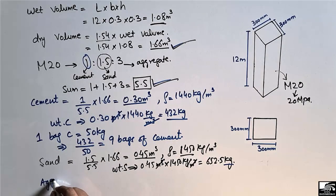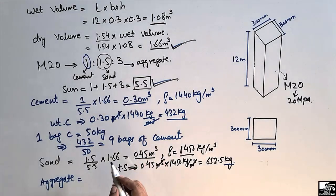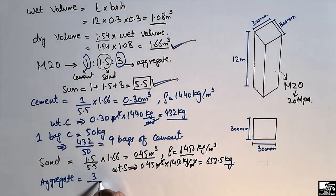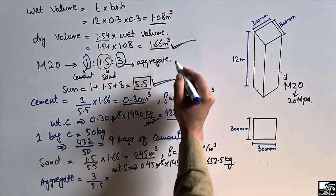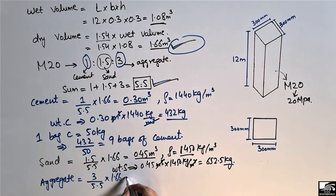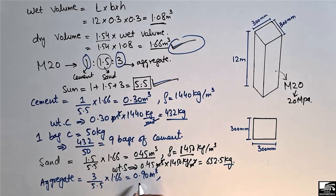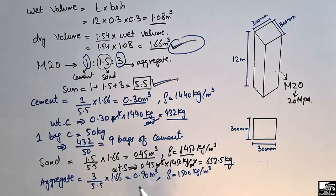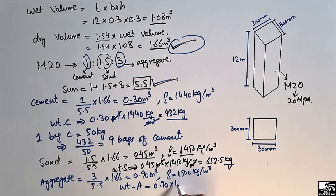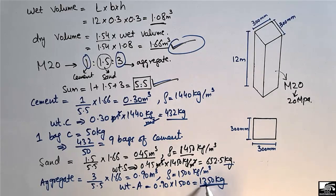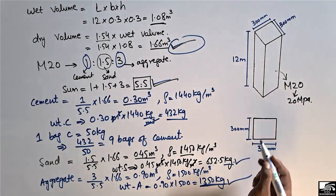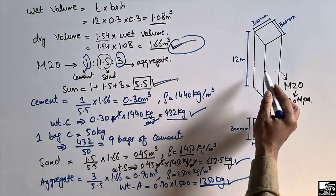For aggregate, we apply the same formula: (3 / 5.5) × 1.66, giving us 0.90 cubic meters. The density of aggregate is 1500 kg/m³, so multiplying 0.90 by 1500 gives 1350 kilograms of aggregate. In summary: this RCC column uses 432 kg of cement (approximately 9 bags), 652.5 kg of sand, and 1350 kg of aggregate.